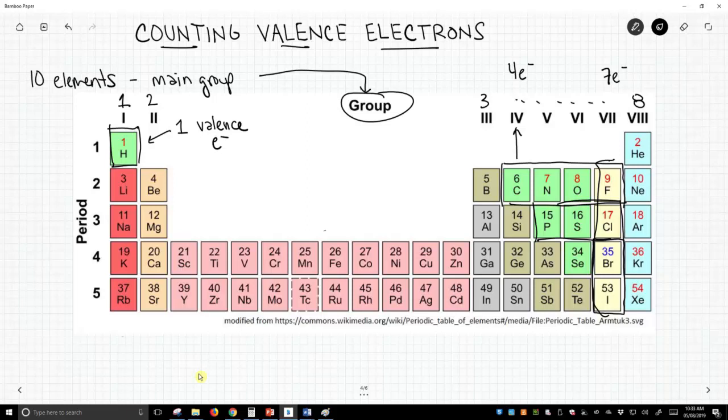On the periodic table that we have, we only go 1 through 8. Often, and I'll show this at the bottom of the screen, people will start again with 1, 2, and then they'll include what they call the d-block elements in their group number counting.